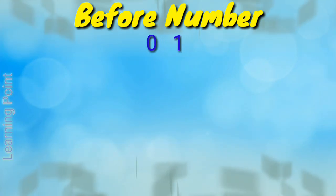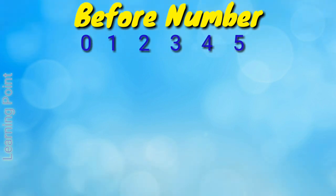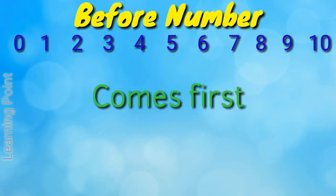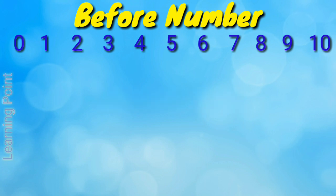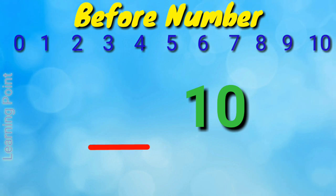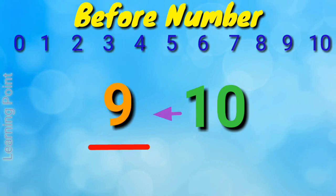Before number. Before number is the number which comes first, or before the given number. I write here 0 to 10. If I take number 10, what comes before 10? That is number 9. Number 9 comes before number 10.